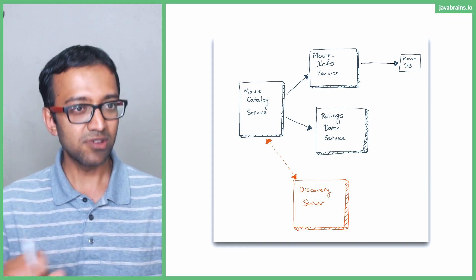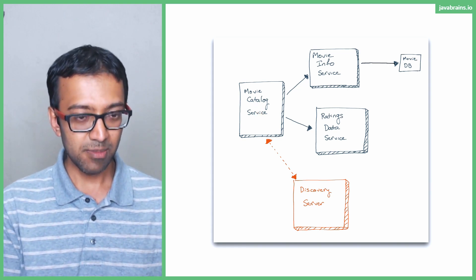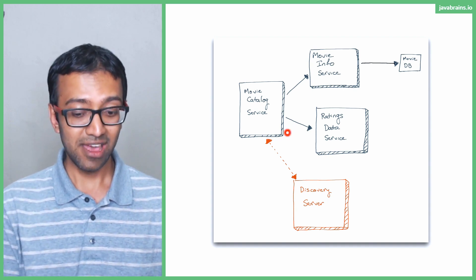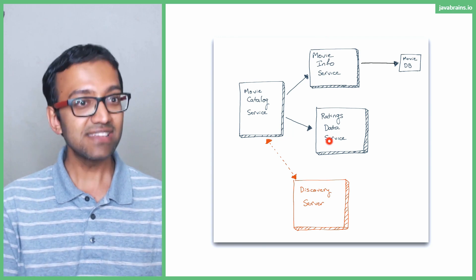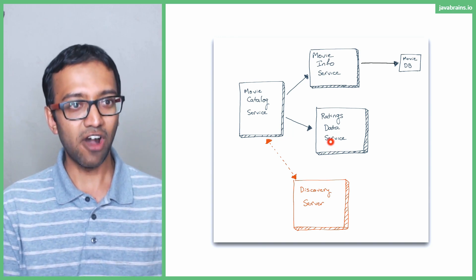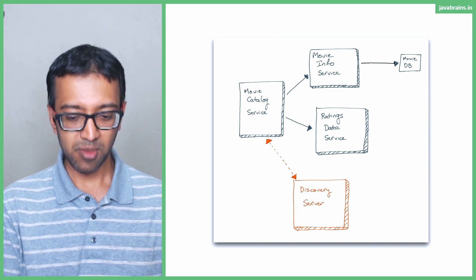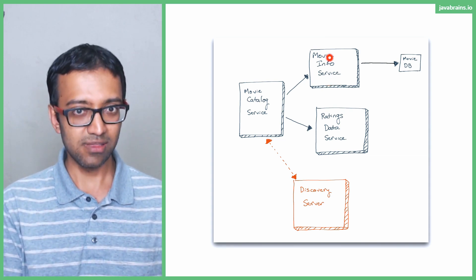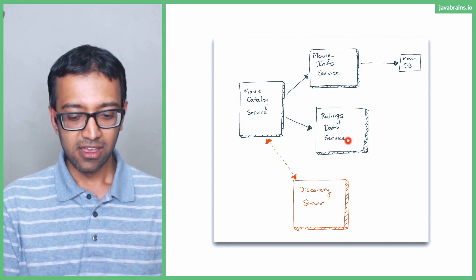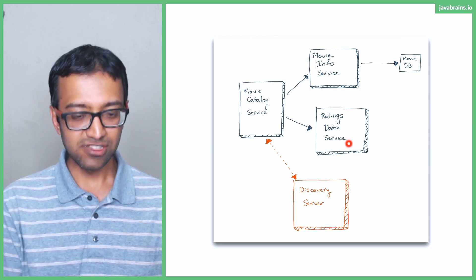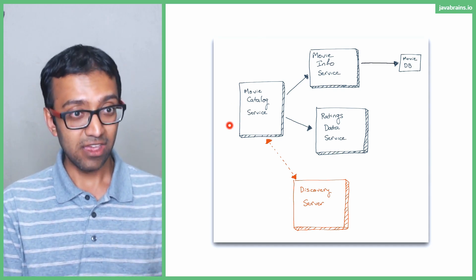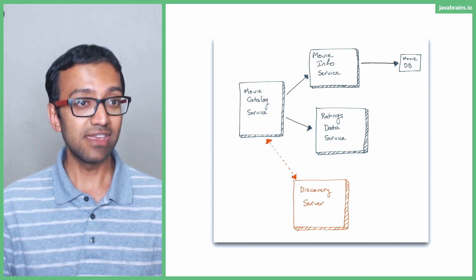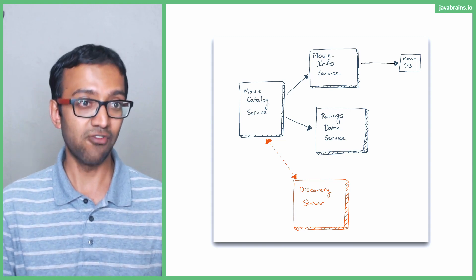Imagine I were to break this out into two separate methods. I'm going to have a method that calls the ratings data service and a method that calls the movie info service, and I'm going to have a fallback for each. So if the ratings data service fails, I have a hardcoded ratings data fallback response. If the movie info service fails, I have a hardcoded fallback movie info response. So if the movie info service is slow and we have five ratings, you're going to get back those five valid rating values, but the movie information will say we're unable to find movie information.